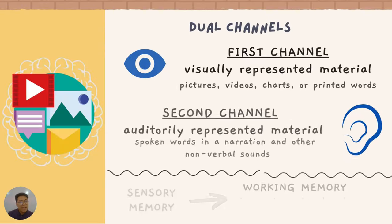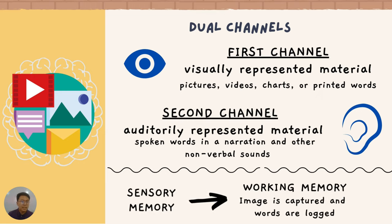There are actually two channels integrated in CTML, and those two channels include our eyes and our ears. For the first channel, these are visually represented materials such as pictures, videos, charts, or printed words. And we have auditory materials such as spoken words in a narration and other non-verbal sounds.